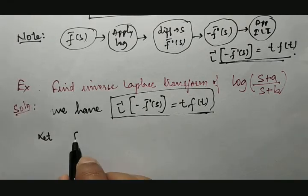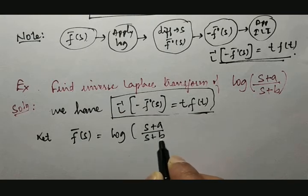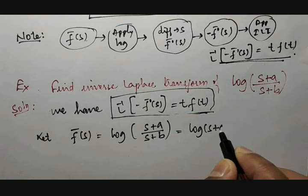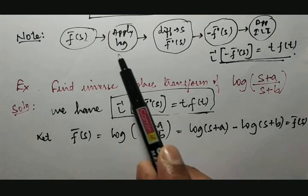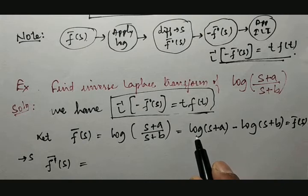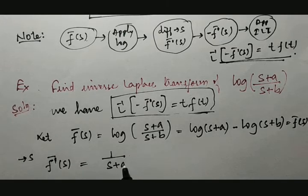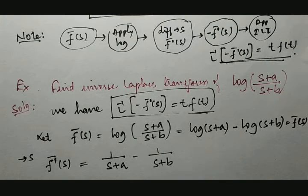Let us consider the given function as f̄(s), which is log((s + a) / (s + b)). Expanding using logarithm properties: f̄(s) = log(s + a) - log(s + b). Now differentiate with respect to s. f̄'(s) = 1/(s + a) - 1/(s + b).